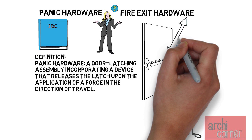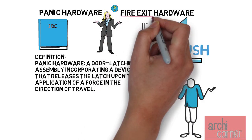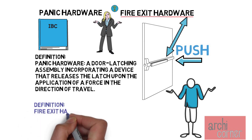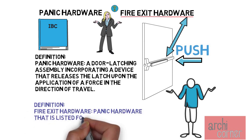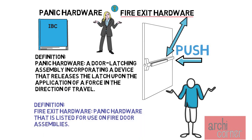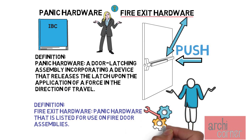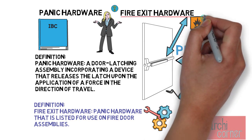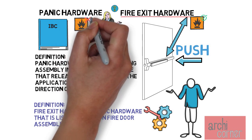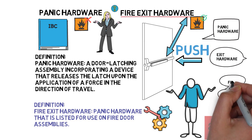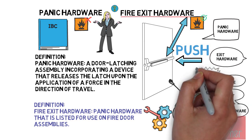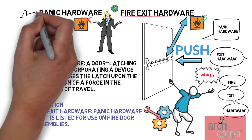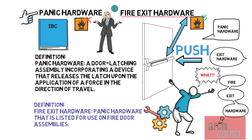So what is the difference between panic hardware and fire exit hardware? The code definition for fire exit hardware is panic hardware that is listed for use on fire door assemblies. From a mechanical aspect they both provide similar operation to open the door, but from a fire rating standpoint one can be used on a fire rated door assembly and the other cannot. For the purposes of this video we will use the term panic hardware, but keep in mind that fire exit hardware is allowed in fire rated conditions while panic hardware is not.